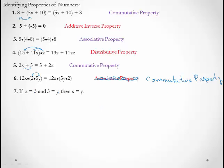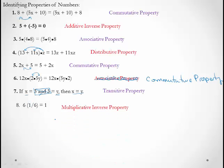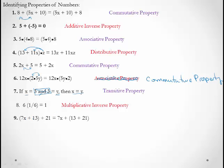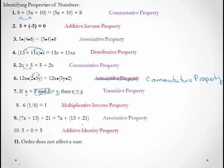If x = 3 and 3 = y, then x = y. Whenever you have a matching value in the middle that you can remove to get a direct statement, that's the transitive property. 6 × (1/6) = 1 — this is multiplicative inverse. 7 + (13 + 21) = (7 + 13) + 21 — the parentheses moved, so associative property. 5 + 0 = 5 — additive identity. And when the order does not affect a sum, that's commutative property.